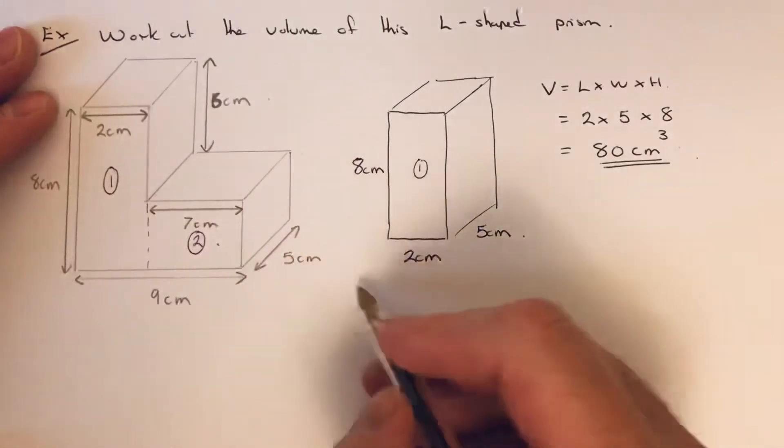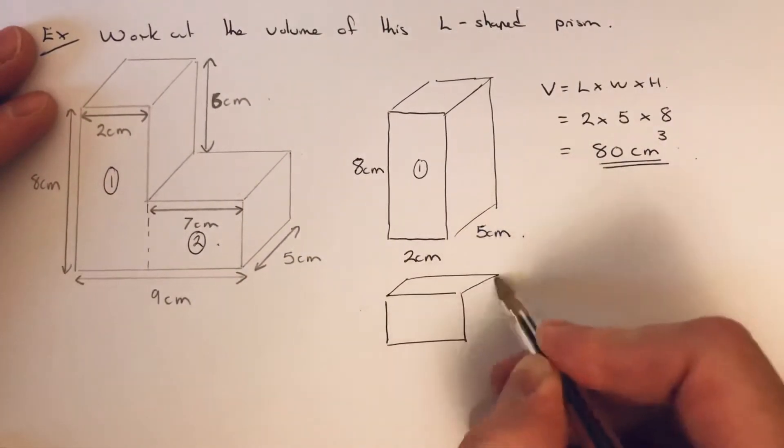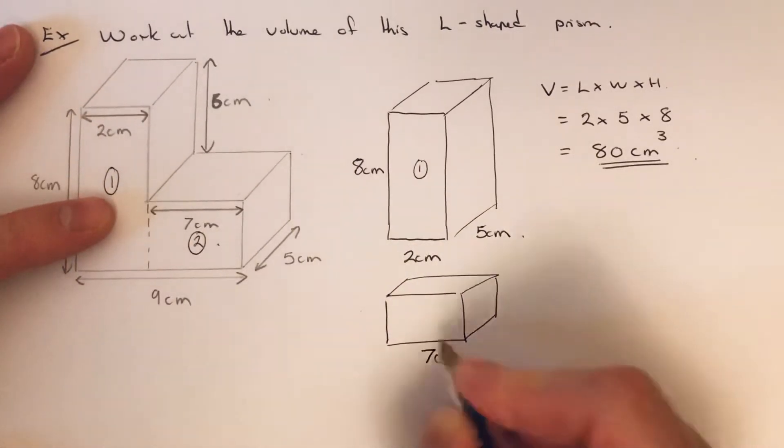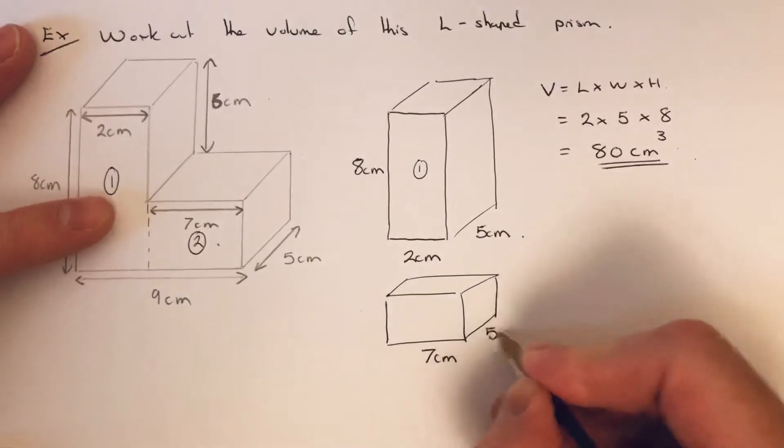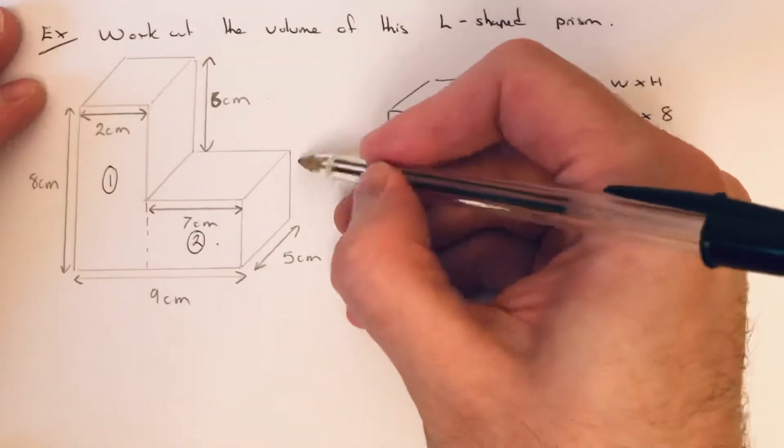Again I'm going to sketch this cuboid out, marking in the dimensions. It has a length of 7, a width of 5, and have we got the height?